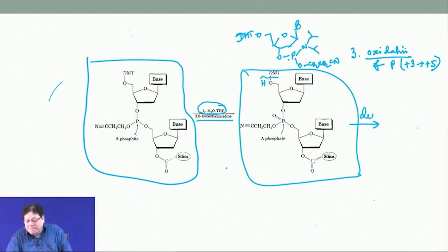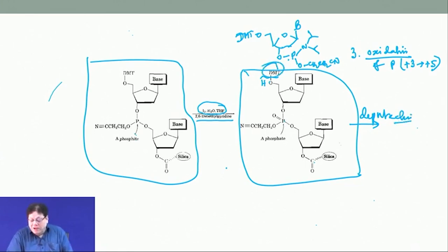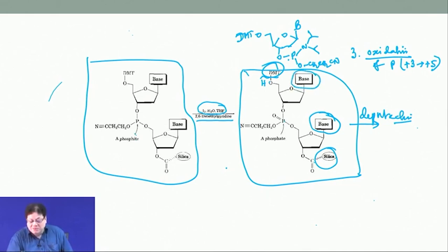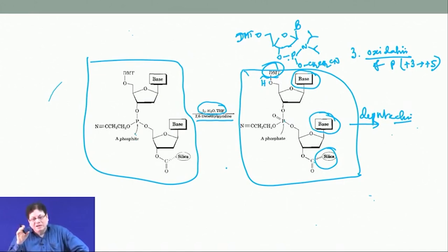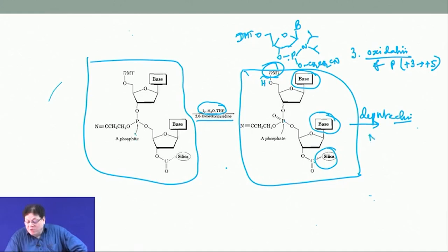When the desired oligonucleotide length is reached, the deprotection steps begin. First, you take the DMT off; then all remaining groups are removed by aqueous ammonia. DMT requires trichloroacetic acid or dichloroacetic acid — some chloroacetic acid — and then aqueous ammonia removes the rest.